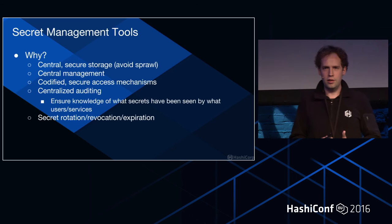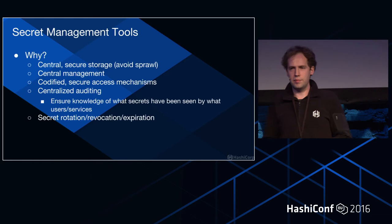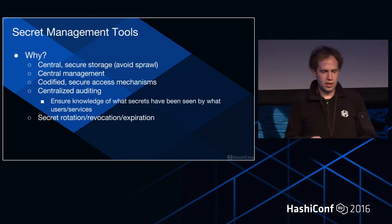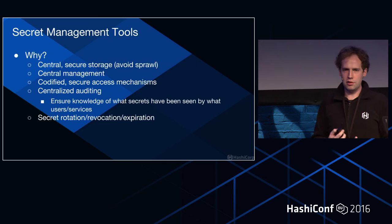Codified secure access mechanisms — you can enforce that TLS 1.2 is required to access a secret instead of falling back to SSL v3 for some reason. Centralized auditing ensures that any time someone accesses or generates a secret, you know about it. And secret management tools manage secret rotation, revocation, and expiration.